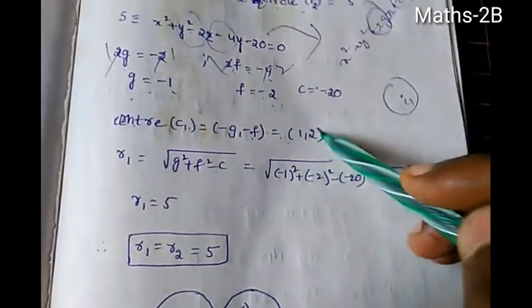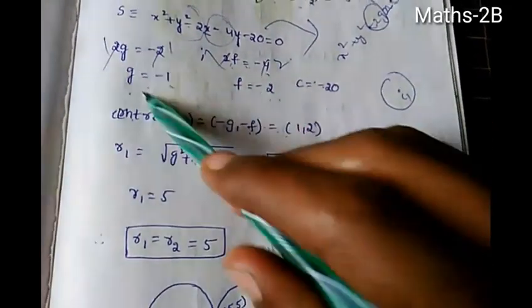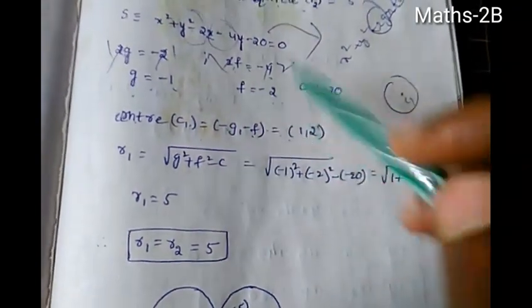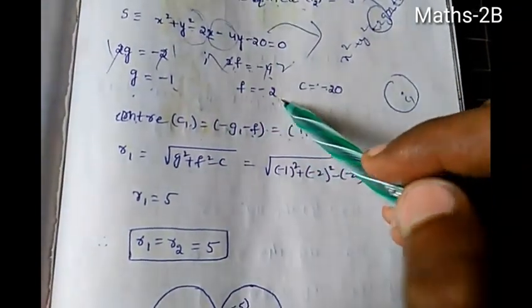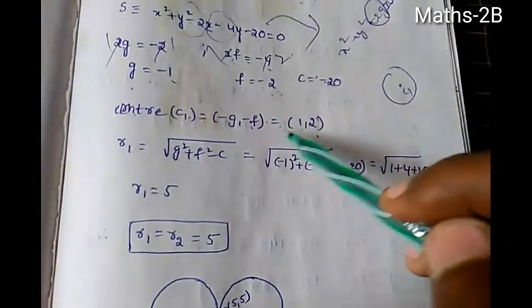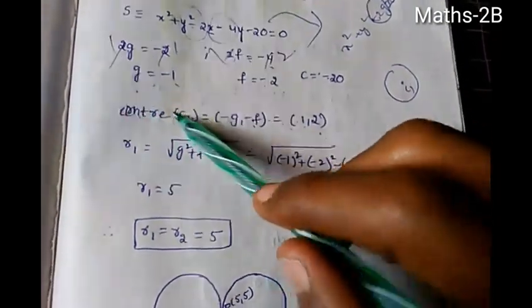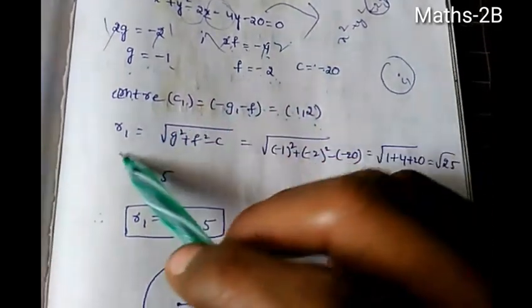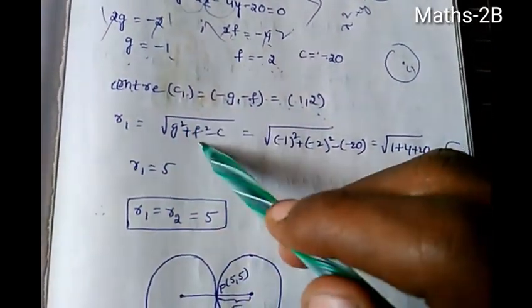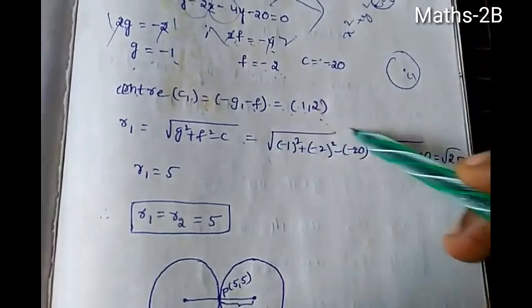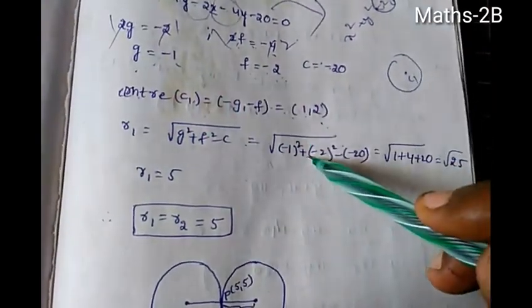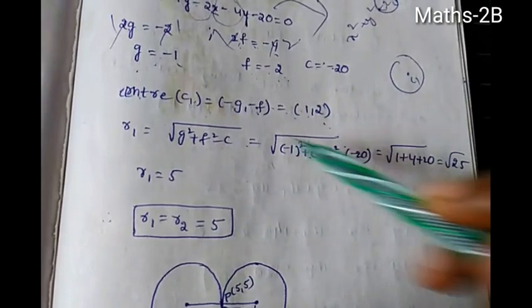So the center C1 is (-g, -f) which equals (1, 2). So the center is (1, 2).